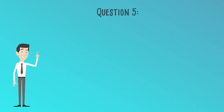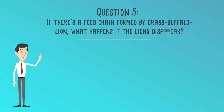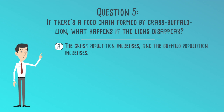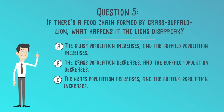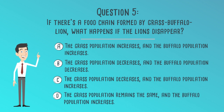Question 5. If there is a food chain formed by grass, buffalo, lion, what happens if the lions disappear? A. The grass population increases and the buffalo population increases. C. The grass population decreases and the buffalo population increases. D. The grass population remains the same and the buffalo population increases.